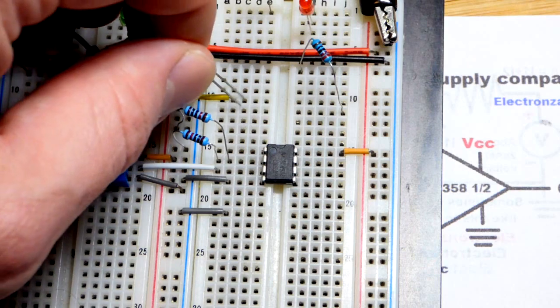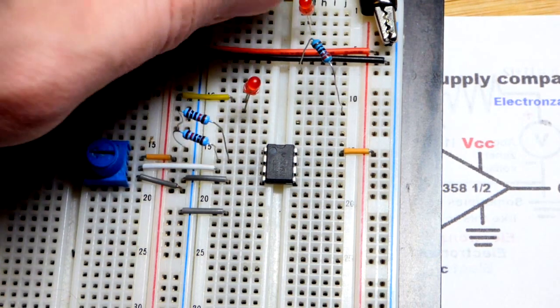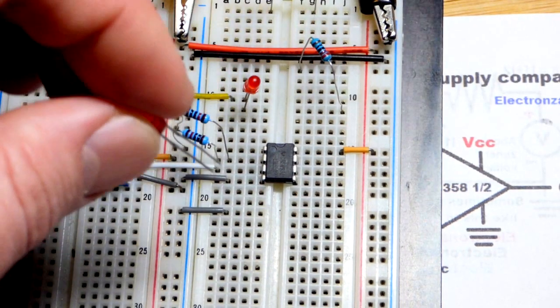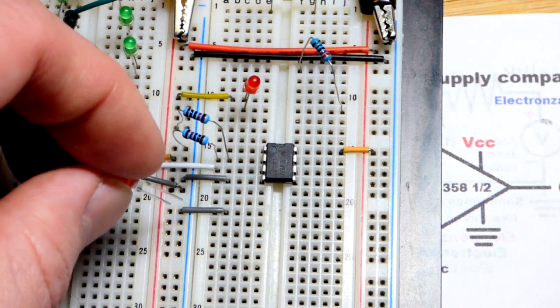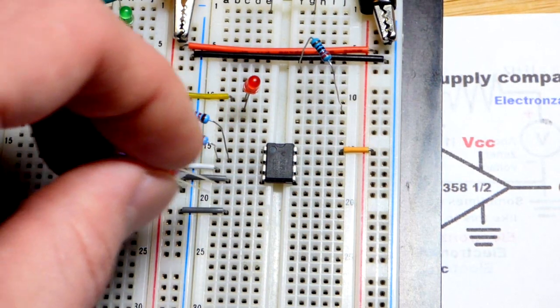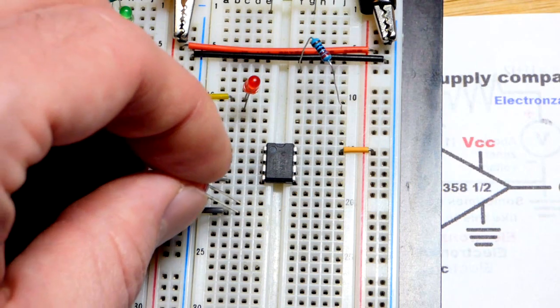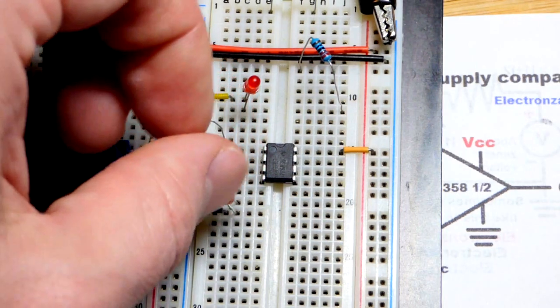And so I'm going to put the long lead, the anode, to that jumper there. This LED, I want the opposite. I want it to light up when the output's high. So I'm going to put the cathode to the negative rail right there. Long lead the anode, I'm going up one row.